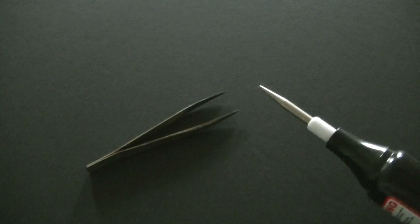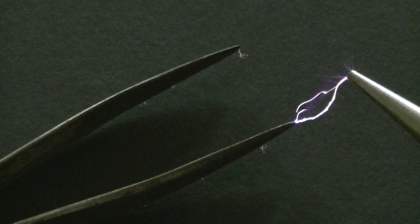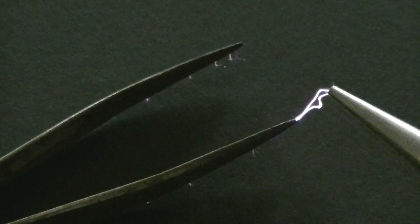Notice that sparks emanate from the tip of the device when it's turned on. It's easier to see these sparks when the tip is placed near a metal object such as these tweezers.